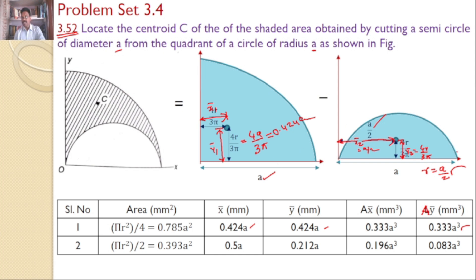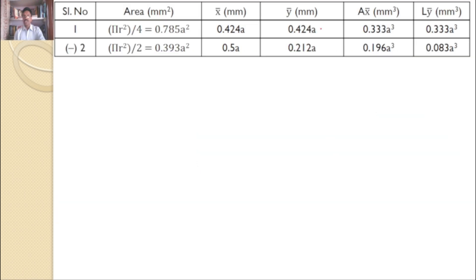The area of the semicircle is πR² by 2, which gives 0.393 A², because R equals A by 2. X bar equals A by 2, that is 0.5 A. Y bar equals 4R by 3π with R equal to A by 2, which gives 0.212 A. Now I can calculate A·X̄ and A·Ȳ. This completes the table.